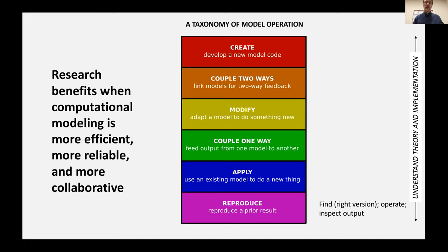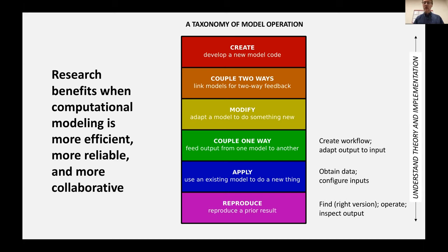All of those require understanding of the underlying theory, but they also involve a number of technical tasks that can form barriers to progress if they are not framed in an efficient way. Reproduction, for example, requires somebody to locate the software, the correct version, to operate it, to inspect the output. If you want to apply a model, you also need to be able to configure its inputs and obtain input data. If you want to couple a model in one direction — for example, using a model of soil moisture as input to a model of plant growth — you need to create some kind of a workflow and adapt the outputs to inputs.